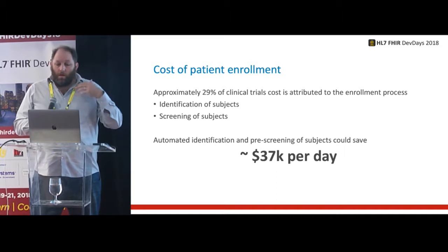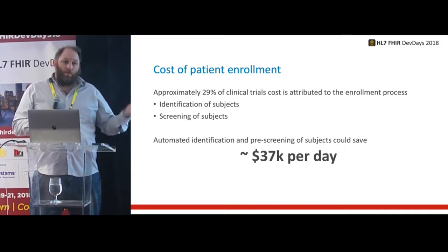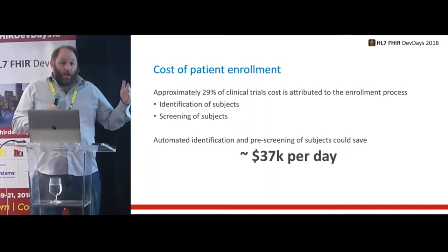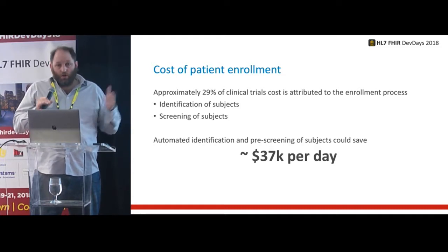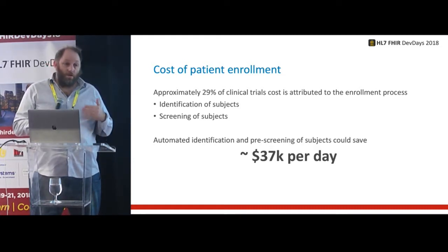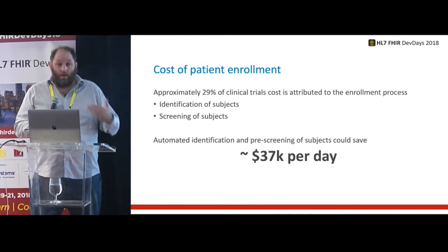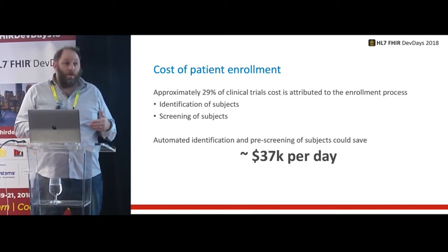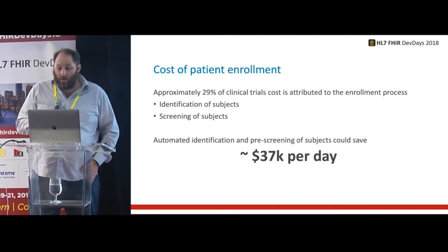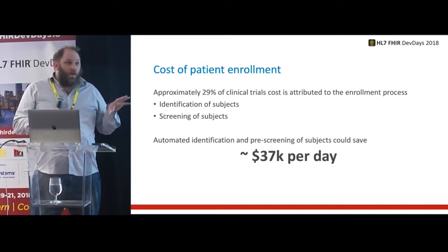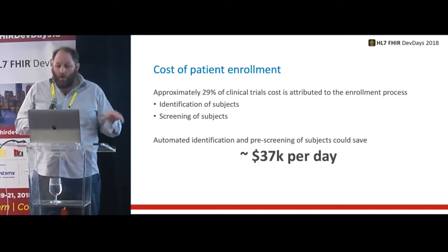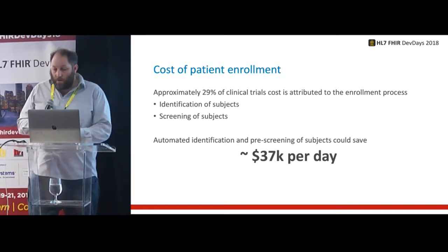If we could use FHIR resources to automatically identify populations of patients from systems, we could be saving up to $37,000 a day in the recruitment process. Beyond the dollar side, it also shrinks the amount of time it takes to get a drug to market. If these drugs are genuinely going to improve people's lives, we have a moral responsibility to facilitate that as much as possible. There is a dollar value associated with it, but there's also a human value.